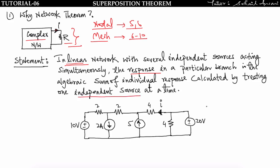Suppose you have a circuit in which you have to find the current across a 4Ω resistor. If you apply mesh analysis you will get 4 mesh equations because there are 4 loops present; if you apply nodal equations you will get 3 nodes, meaning you have to solve 3 equations. So here I will go with superposition theorem.